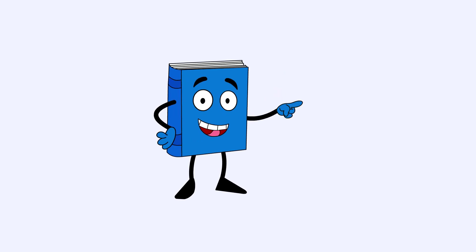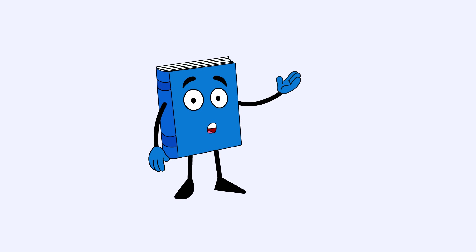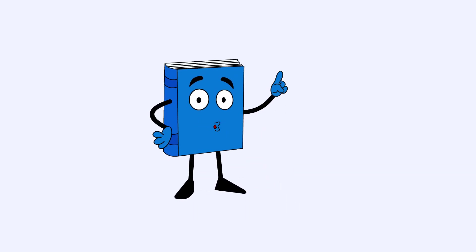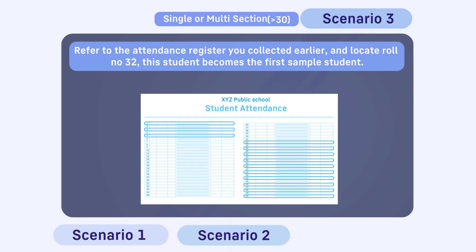Now using the sampling interval M, select every mth student, or in this case, every second student. So 34, 36, 38 and so on till 30 students are complete. If the count crosses 50, you start again from 1 till 30 students are complete. In case any students are absent, skip those roll numbers and select the next mth roll number till a total of 30 students are selected.